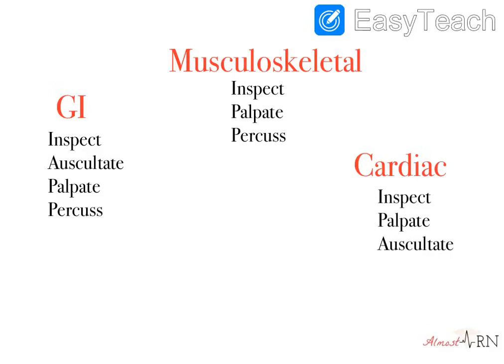So this is where the specific order of these steps comes into play. For GI, we're going to inspect first and auscultate second, then palpate and then percuss. The reason why we auscultate second is because by palpating and percussing, we could alter some bowel sounds. We want to make sure we're listening to our patient's true stomach sounds, so we always auscultate second when we're dealing with GI.